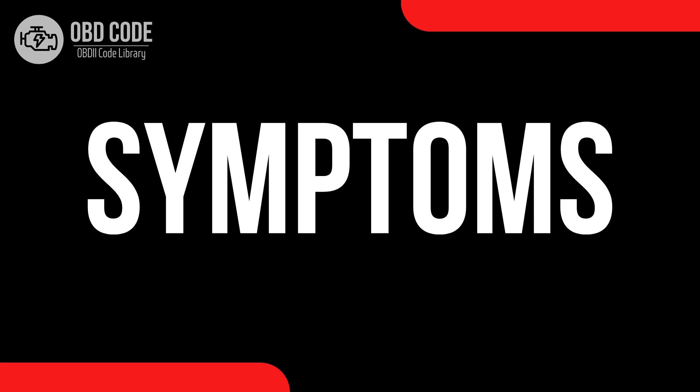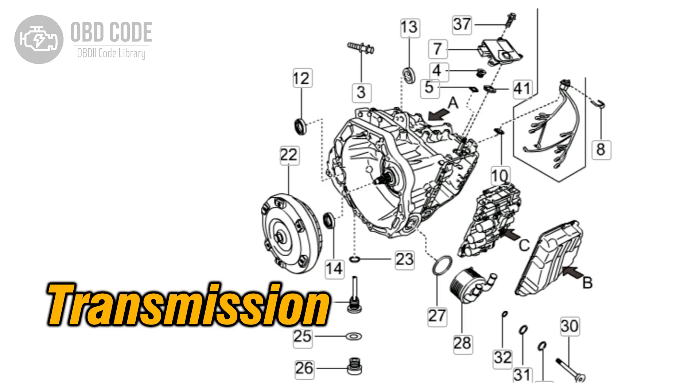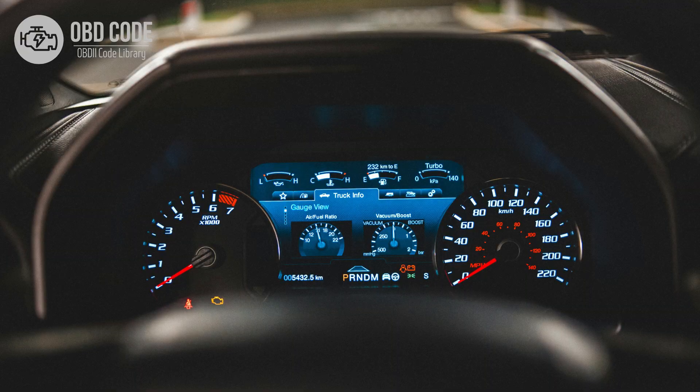Code symptoms P0962: 1. Erratic shifting behavior. 2. Poor transmission performance. 3. Delayed or harsh shifting. 4. The check engine light (CEL) may be illuminated.